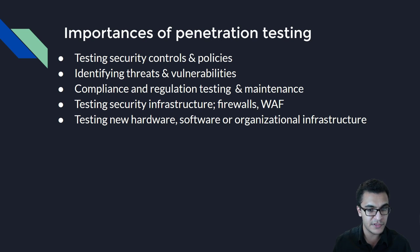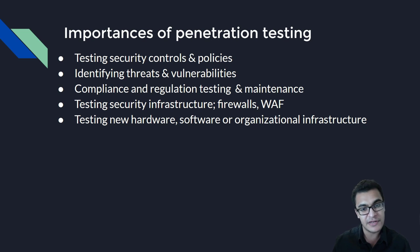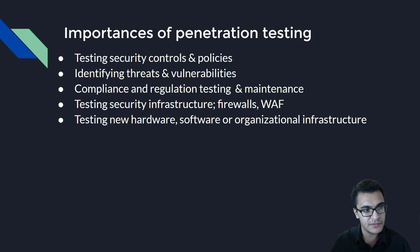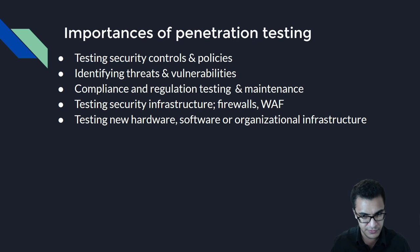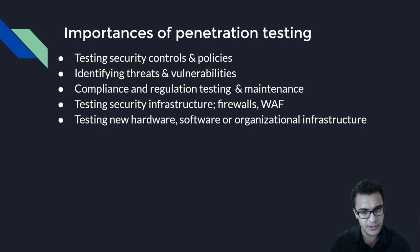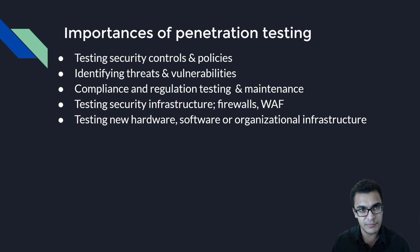Number four is testing security infrastructure like firewalls, web application firewalls, and intrusion detection systems. You're primarily trying to test the security infrastructure — crafting different packets, performing encoding to bypass firewalls and intrusion detection systems. And of course, you have testing new hardware that's been implemented and software that's been introduced into the organization.